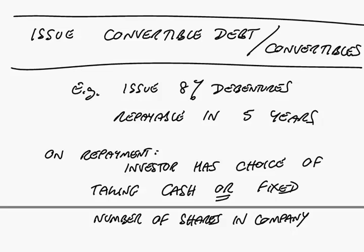You knew when you bought the debentures that you'd get 8% interest, and in 2010 you'd be given the choice of taking cash or shares. The share price is currently $4.50. The question is: what will debenture holders choose to do on maturity if the share price is A) $4.50, or B) $6.50?